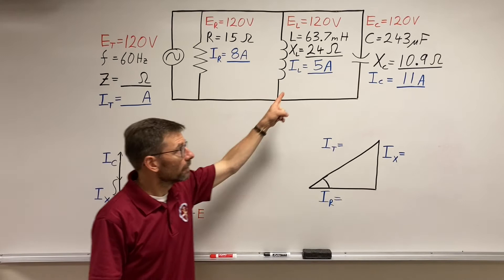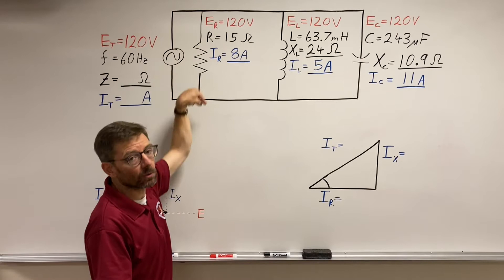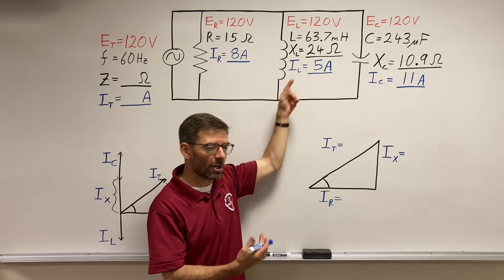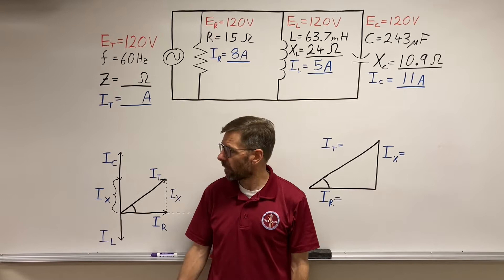Now there's something going on between these currents here. The resistive current is just doing its thing, going with the voltage, in phase. The inductive amps are lagging behind 90 degrees. The capacitive amps are leading the voltage by 90 degrees. So it puts these two exactly opposite from each other.